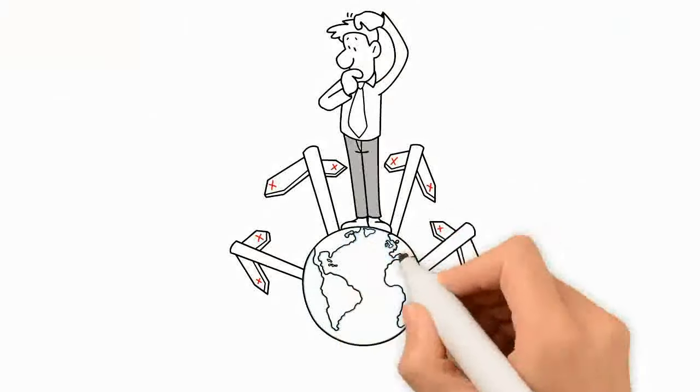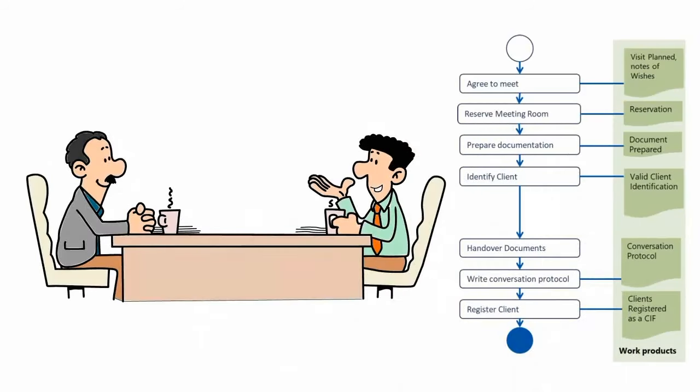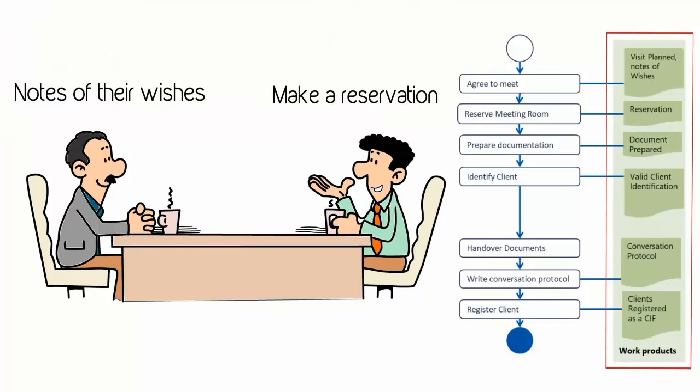However, if you look at the process in detail, it's not clear what shall be done, what are the expected work products, and tools to use. For example, if you agree to meet, then you will have notes of their wishes, you'll have to make a reservation, there will be a conversation protocol, and more.